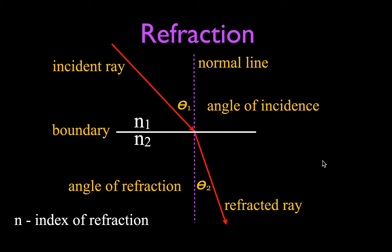These are the terms you should be familiar with for refraction and Snell's law. We have the incident ray — that's the ray coming in, the ray going towards the boundary between two materials. It makes with the normal line the angle of incidence. The angle is always measured between the normal line and the ray, not between the ray and the boundary. The normal line is an imaginary line drawn perpendicular at a right angle to the boundary where the incident ray strikes. When that incident ray crosses the boundary, it becomes the refracted ray, making the angle of refraction with the normal line — designated theta 1 and theta 2. N1 and N2 are the indices of refraction of those materials.